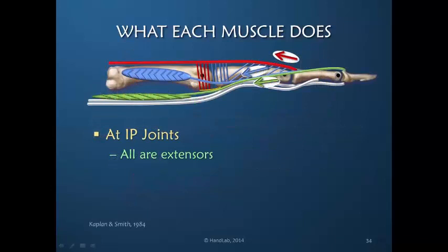At the interphalangeal joints, I'm using this schematic drawing to identify in red the power contribution of the extensor digitorum communis, in blue the contribution of the interosseous muscles, and also the lumbrical muscle. All three muscles contribute to finger extension and are active during full finger extension, all pulling proximally to allow interphalangeal joint extension. The role of the lumbrical is unique — I encourage you to review the series on finger motion for a greater appreciation of that unique contribution.